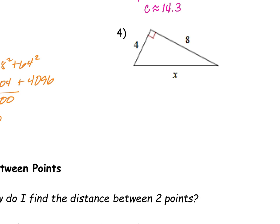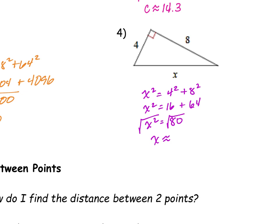Oh, I can do this one in my head. So X squared equals 4 squared plus 8 squared, so X squared is going to equal 16 plus 64, which is 80. I square root that and X is approximately going to be equal to 8.9. You guys remembered overnight how to do this? I am so proud of you guys. Good job.